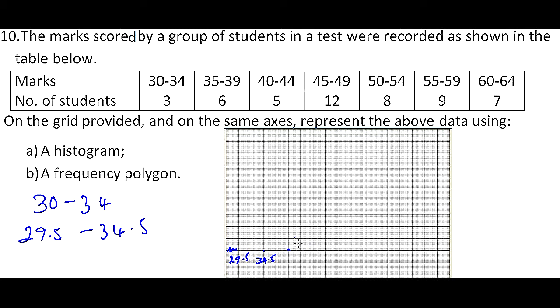The third one, this group is 39.5. The next one is 44.5. The next one is 54.5. The other one is 59.5.